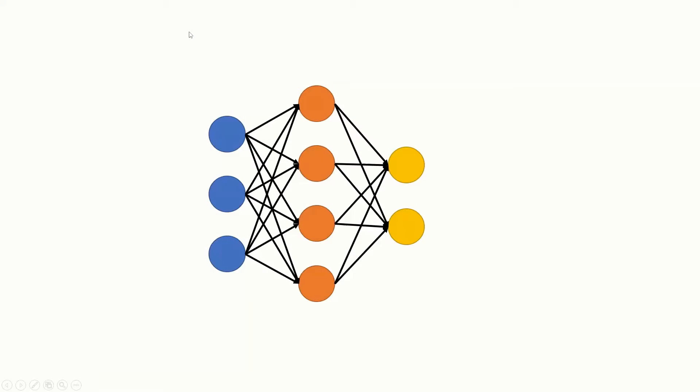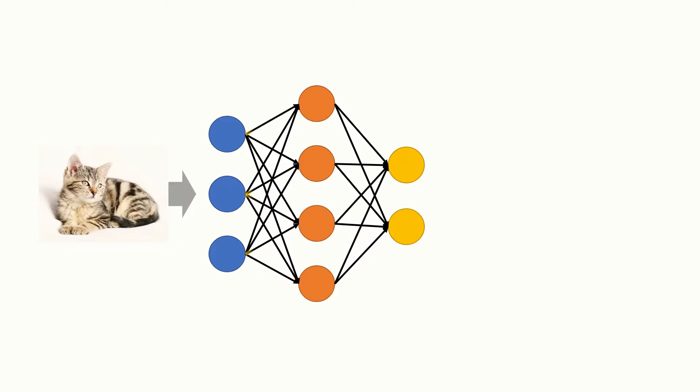Neural networks have become very popular these days, having accomplished many challenging tasks like image recognition, voice recognition, and diagnosis of fault. You might be familiar with this — a typical neural network with fully connected layers. We put pixels of a 2D image into the neural network, and after some calculation, the network predicts the content of the image.